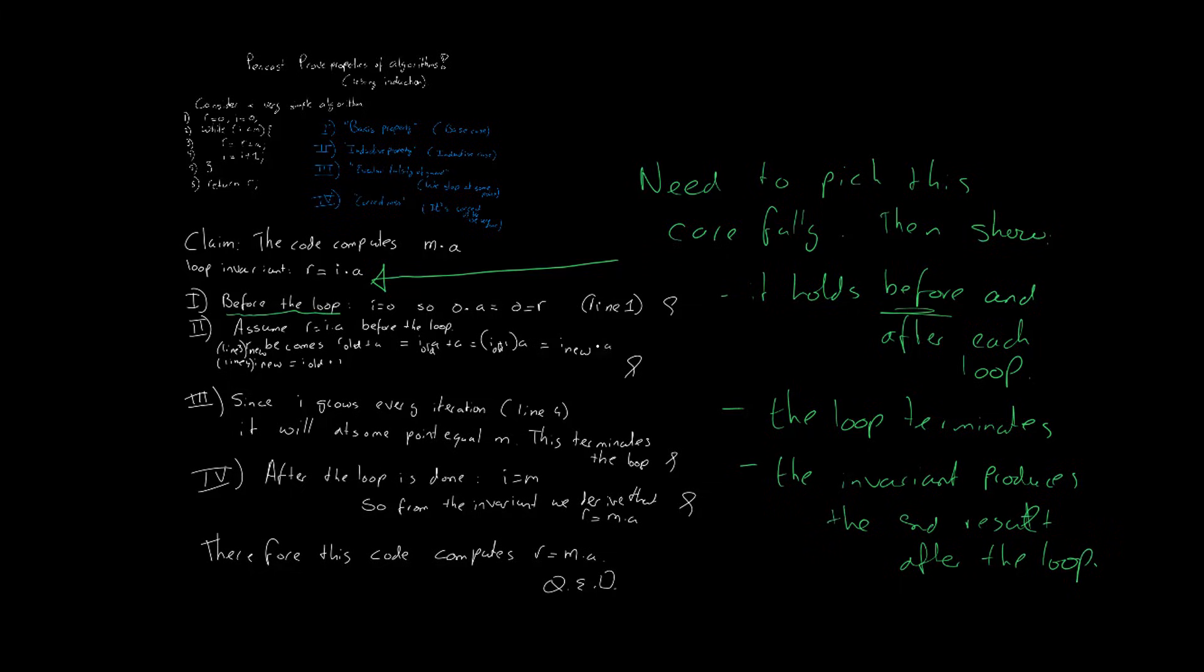And, also that usually the invariant produces the end result that you want after the loop is done. And, that's it. That's how you prove the correctness of an algorithm. In a future course called Algorithms and Data Structures, you'll learn how you can also say something about the runtime of an algorithm. But, we'll save that for another time and another course. See you around.